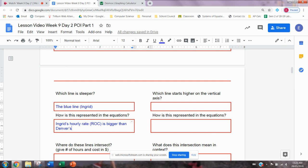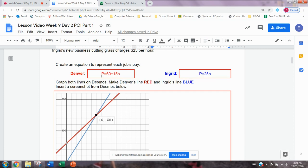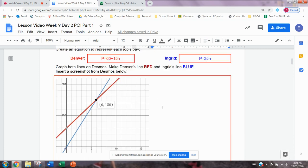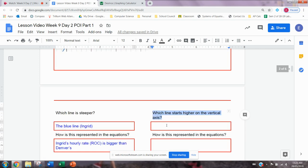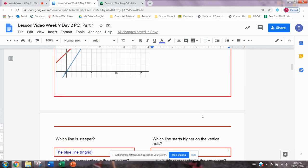The next question over here says which line starts higher on the vertical axis. So let's go and look. Here's the vertical axis and here the red line is starting higher. We see that Denver's line starts higher on the vertical axis. So I'll write the red line, which is Denver.